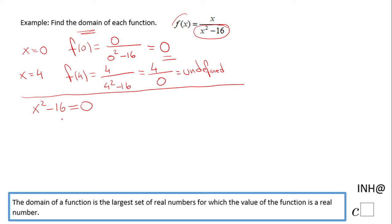In this case, we have a quadratic equation. You can solve it in different ways. I will add 16 to both sides. And then I will take the square root of 16. Don't forget to put plus and minus. And that gives you plus or minus 4.